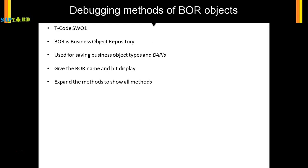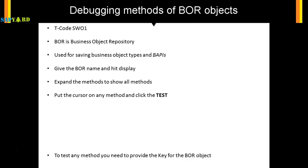Now if you want to debug one particular method, put the cursor on the method and click the Test button. It is just like a normal program where you run it by pressing F8 or the Execute button. Similarly, you have a Test button on the screen, and we will show you in a while how that looks in the actual SAP system.